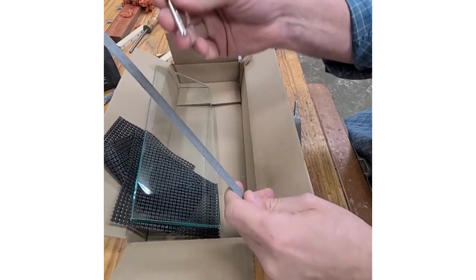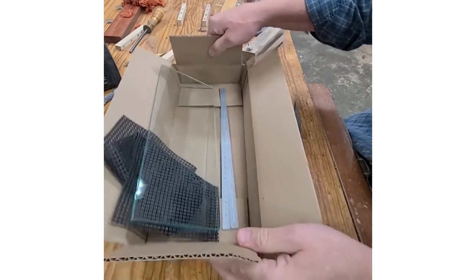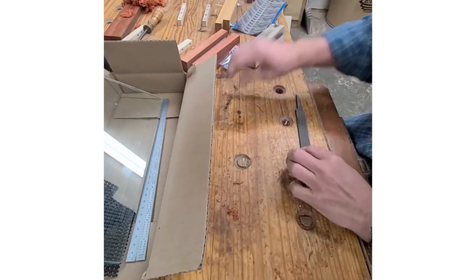You get four rare earth magnets for making a little magnetic handle. Let me show you first of all how to make the scraper vise.